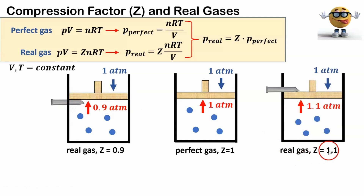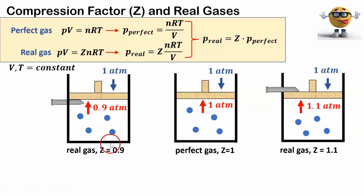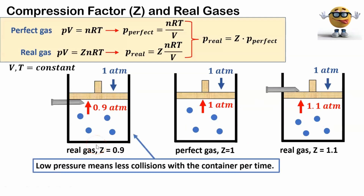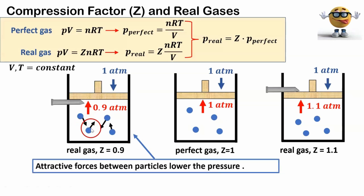On the other side, if the compression factor is greater than 1, say 1.1, the pressure of a real gas will be 1.1 ATM, and we have to hold this piston from going up. If Z is less than 1, there's lower pressure because there's fewer collisions with the container per unit time compared to a perfect gas. There are fewer collisions because there are intermolecular attractive forces that are dominant between the particles. These particles have a little bit of stickiness between themselves, so there are more collisions with each other rather than the container compared to a perfect gas.